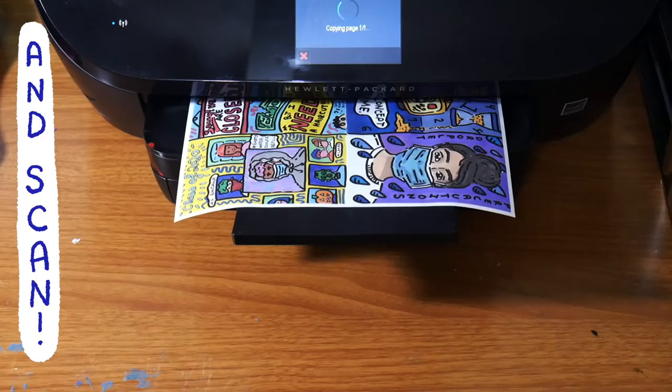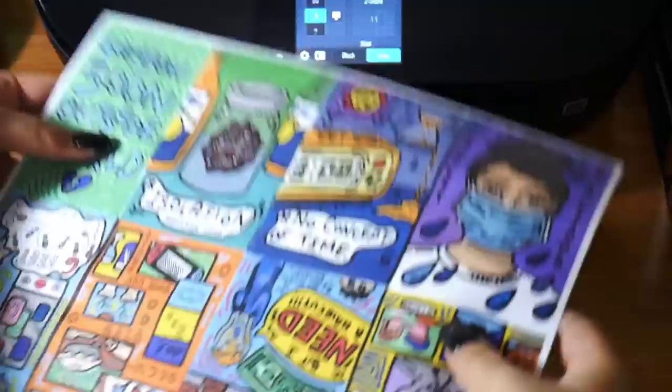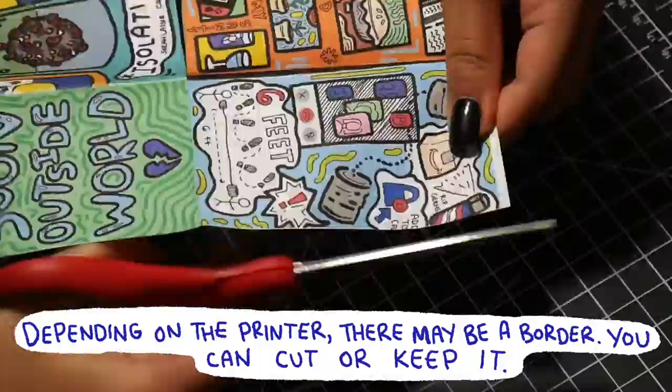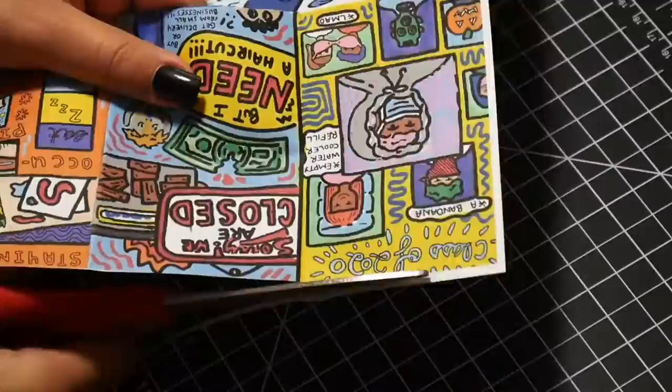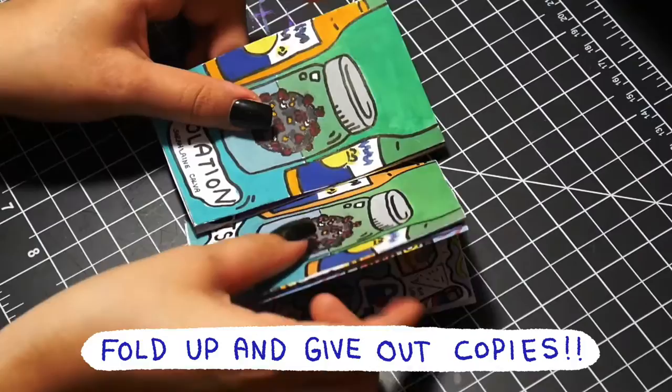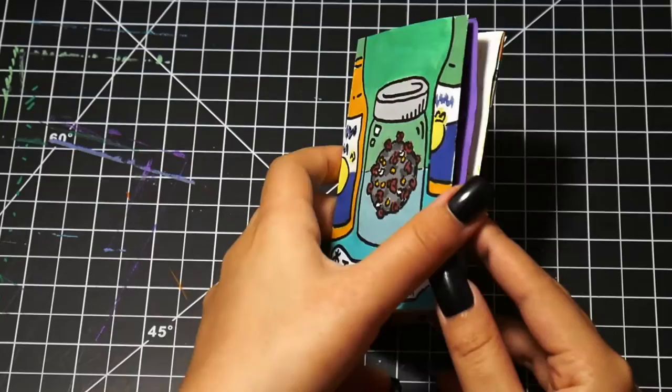All right, and it's as simple as that. You just scan what you made. Just basically do what you did earlier with cutting the slit in the middle and then folding it back into the booklet. And here is the final product of what my zine looks like.